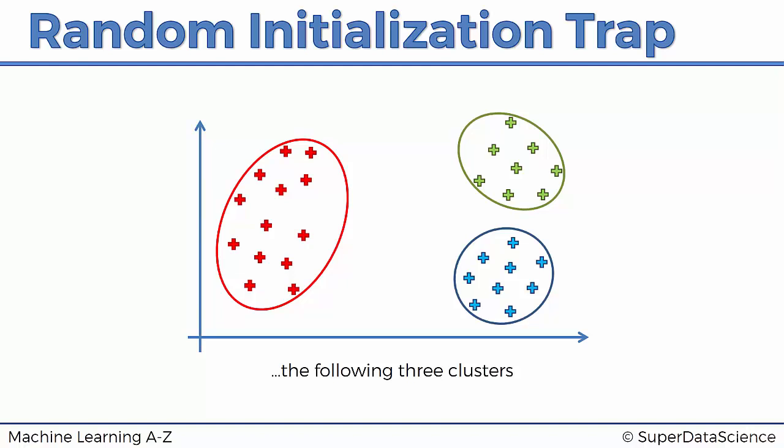Now the question is, what if we select the centroids in different locations? Will we be able to change the result? Will the result be different? What we want from this algorithm is for it to give us a deterministic result because we can select the centroids at random, and therefore we don't want that selection of centroids to affect how the clustering is going to happen. But let's have a look and see what happens.